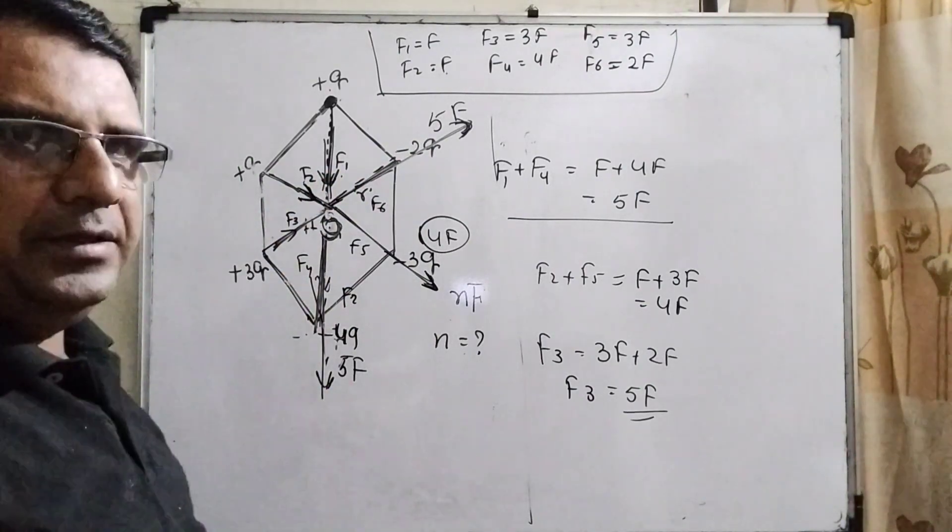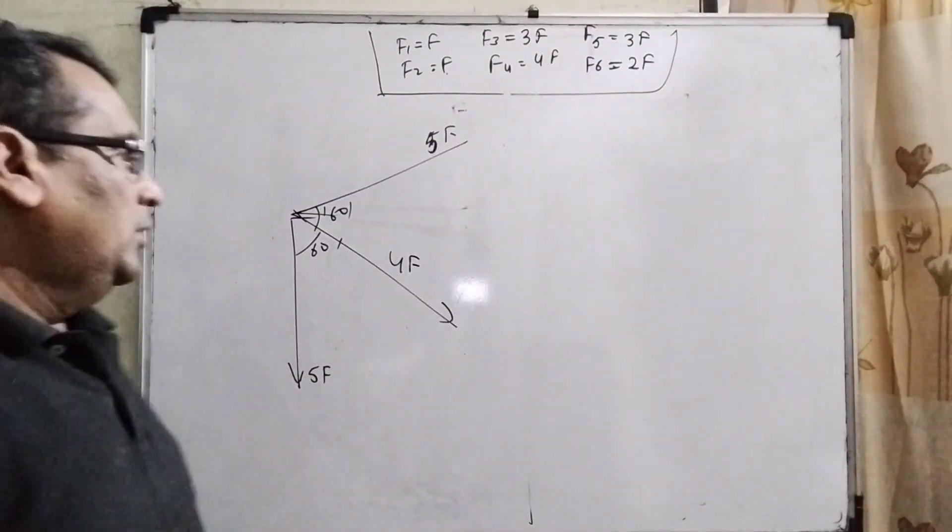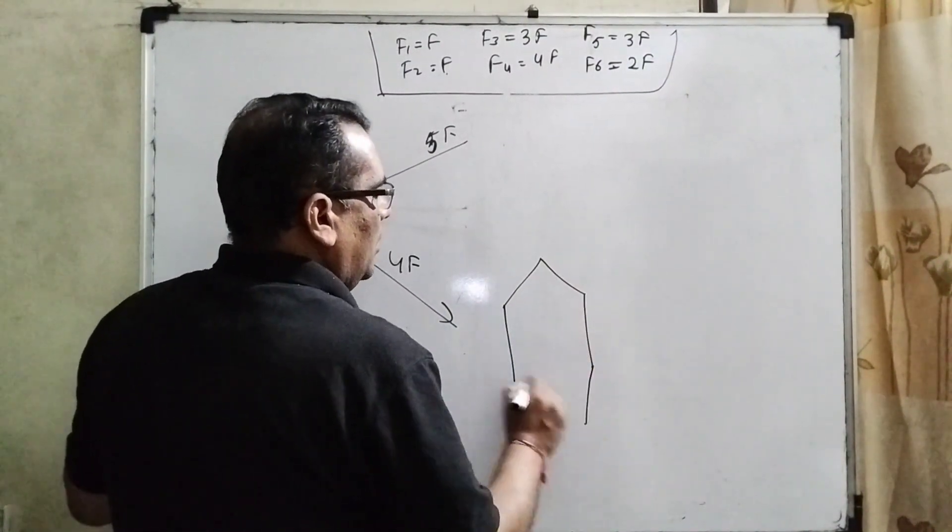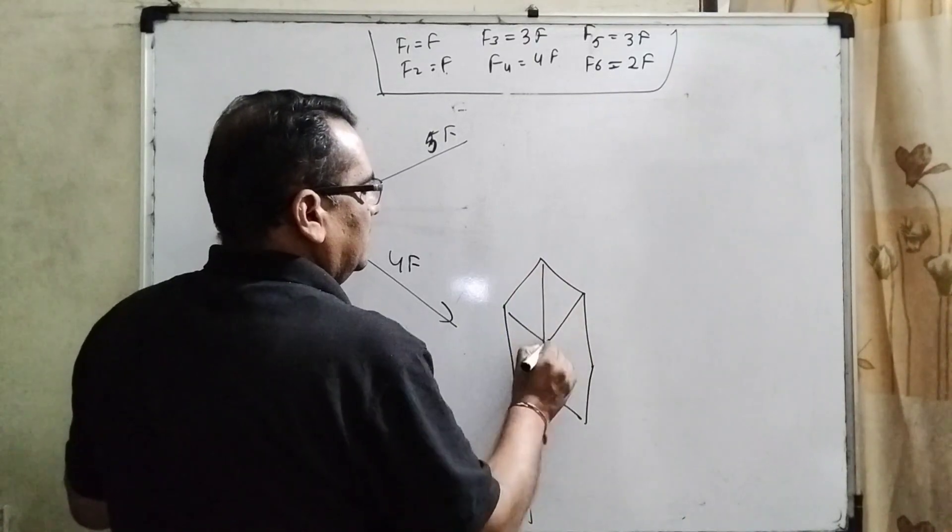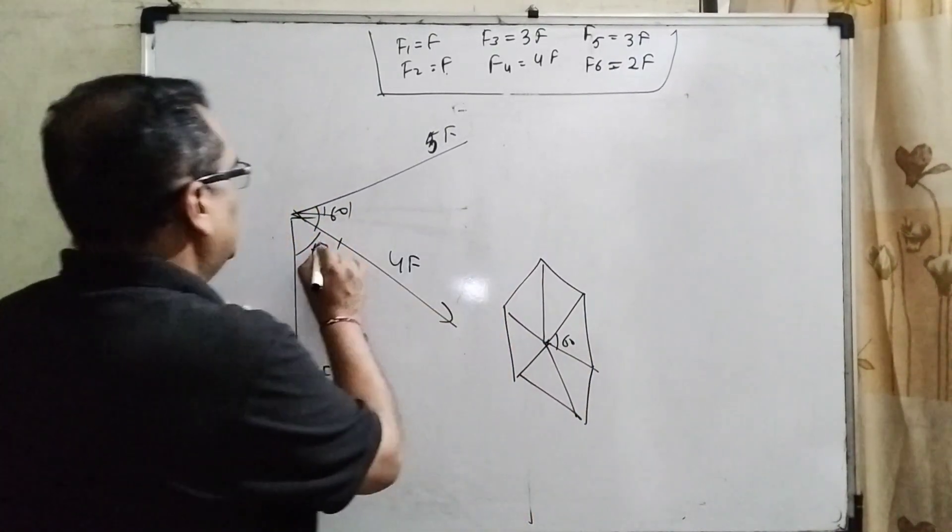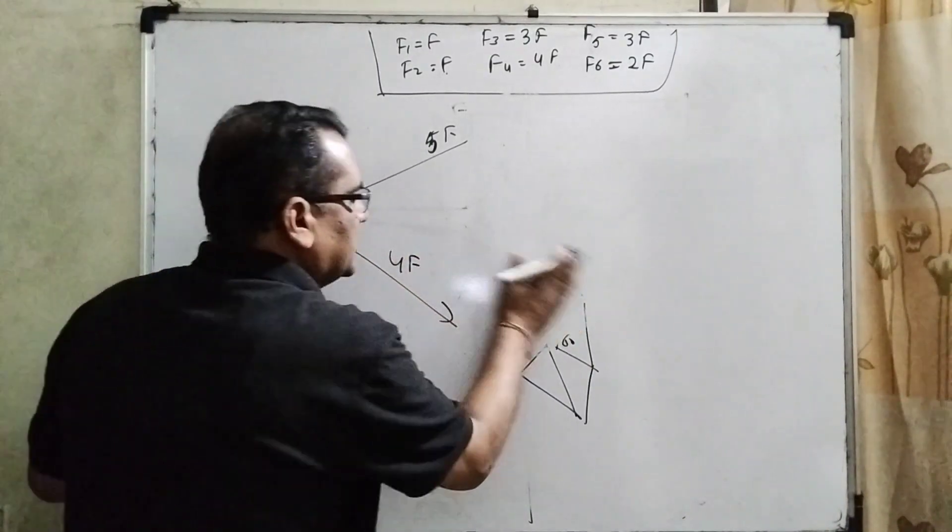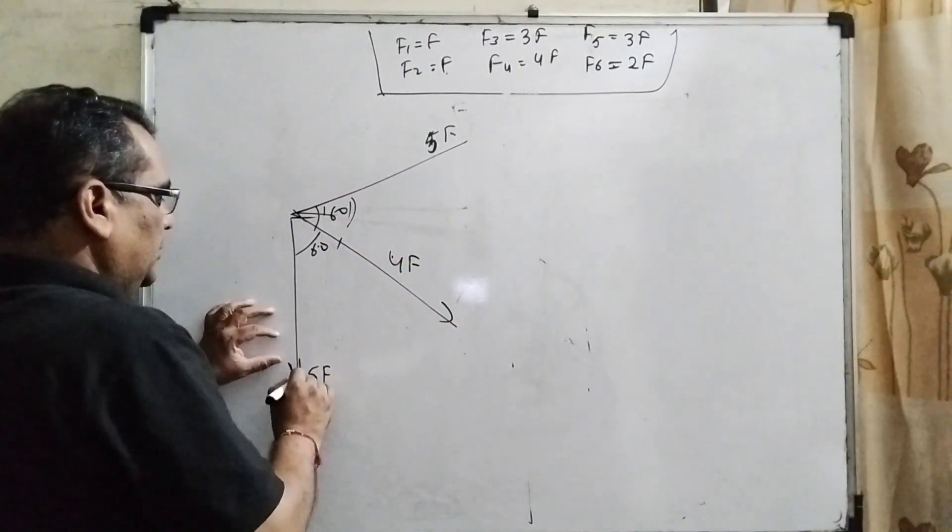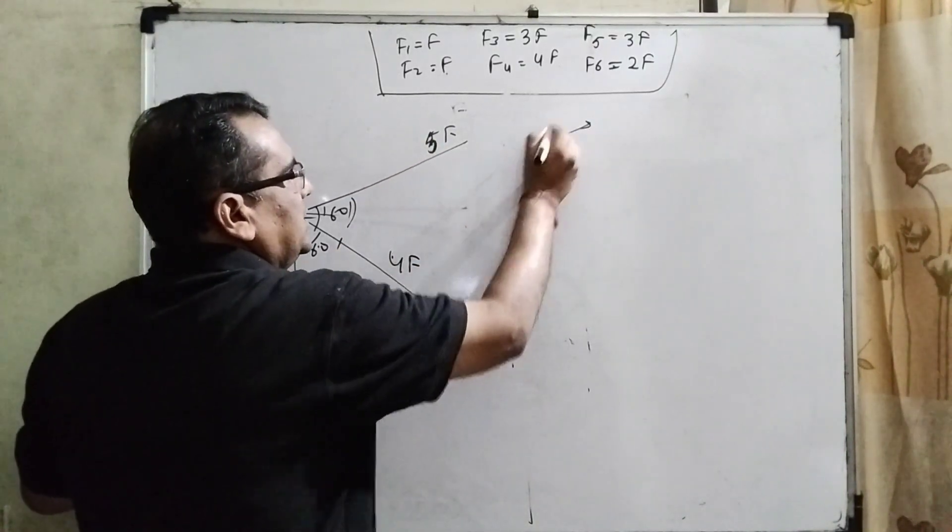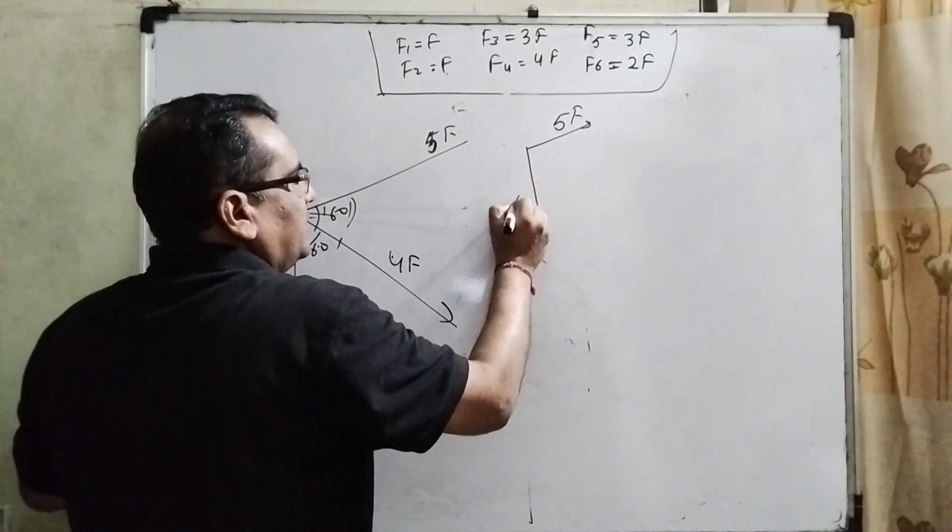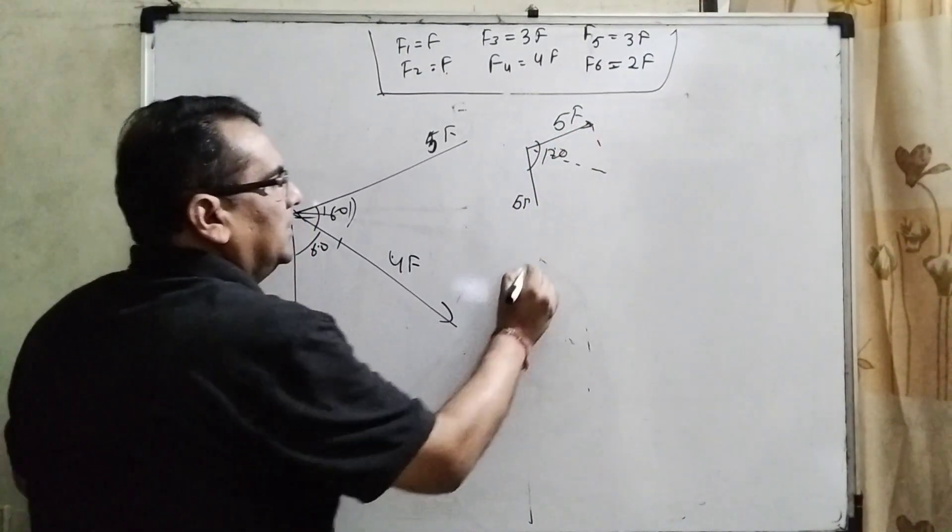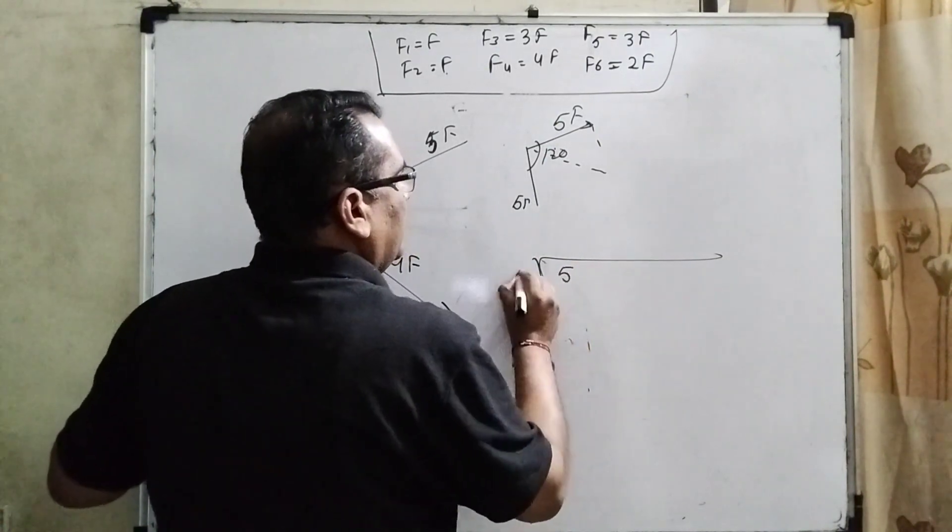Now, you are well known about that in regular hexagon each angle is, how much? 60 degree. So, therefore, this is angle 60. This is angle 60. Let us first we have to using 5F and 5F. This is 5F. This is 5F and this is 5F. Total angle 120 by using law of parallelogram. Then what is the formula?